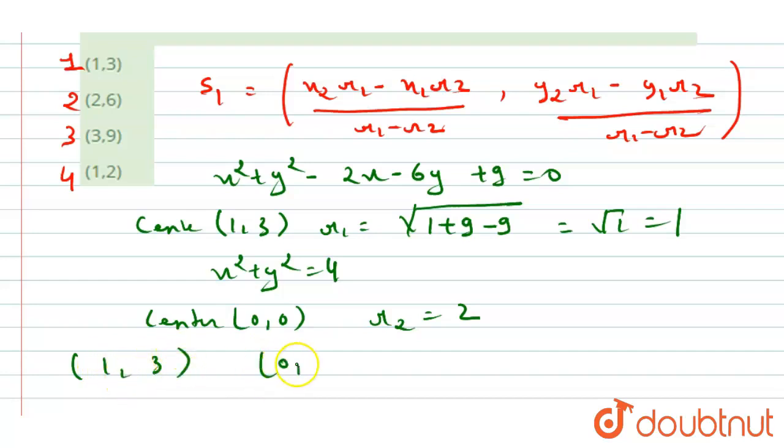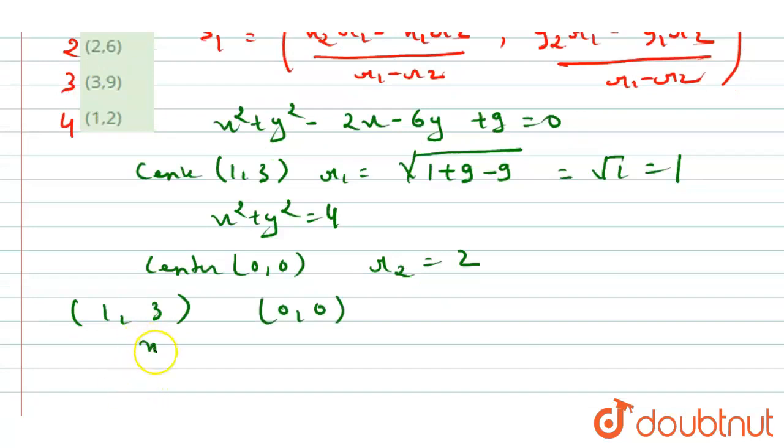Now we will find the values: (1,3) and (0,0). It means x₁ = 1, x₂ = 0, y₁ = 3, and y₂ = 0. We already got r₁ = 1 and r₂ = 2.